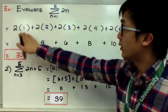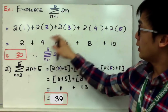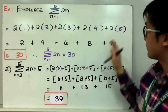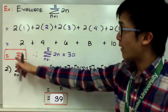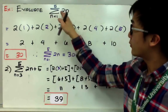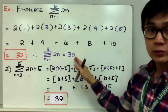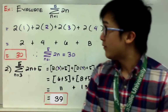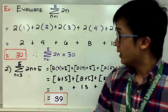So 2×1 is 2, then 4, 6, 8, and 10. Adding them all up gives you 30. Therefore, the summation of 2n from 1 to 5 is simply equal to 30, and that's how we evaluate summation notation of this form.